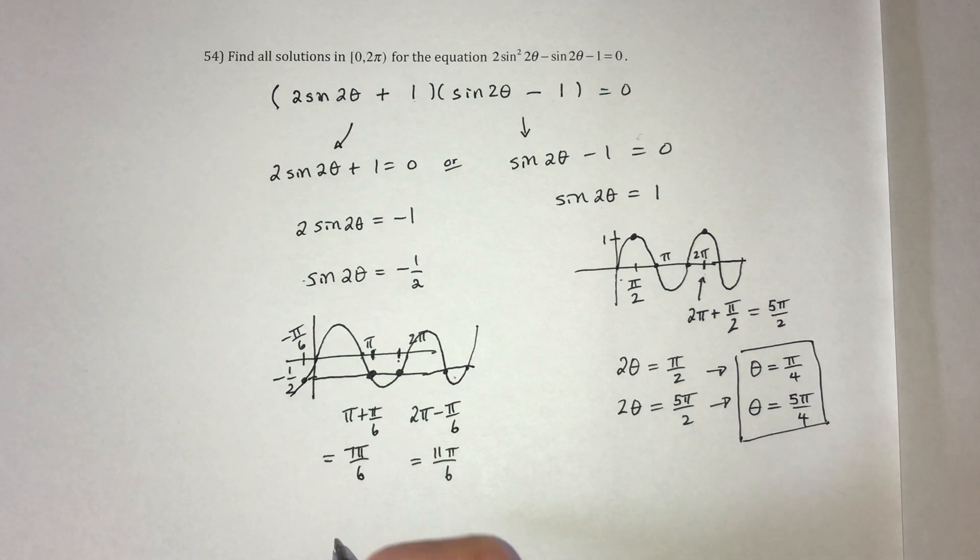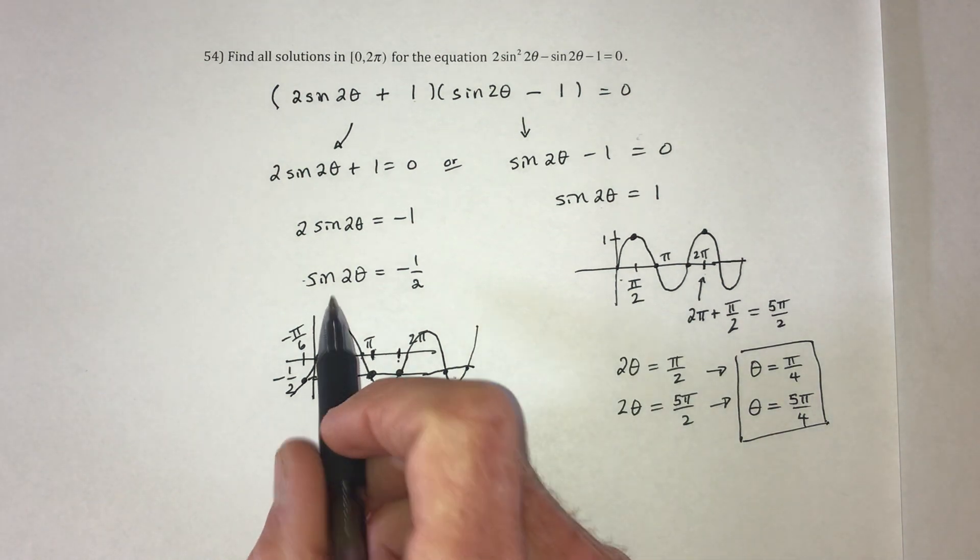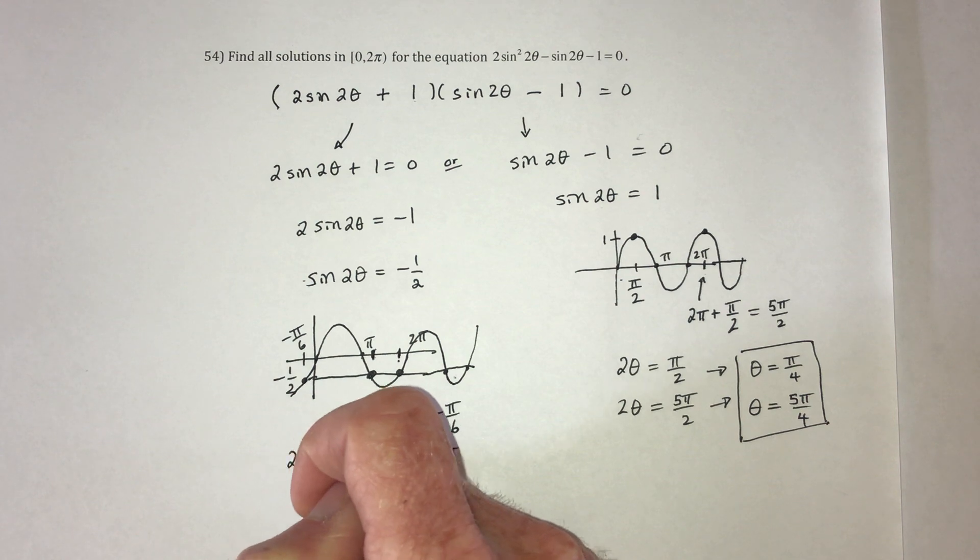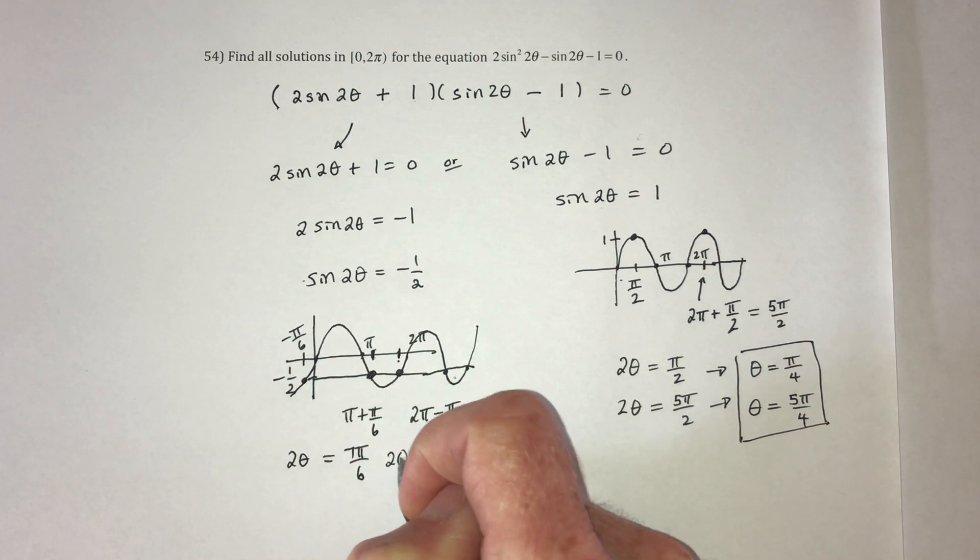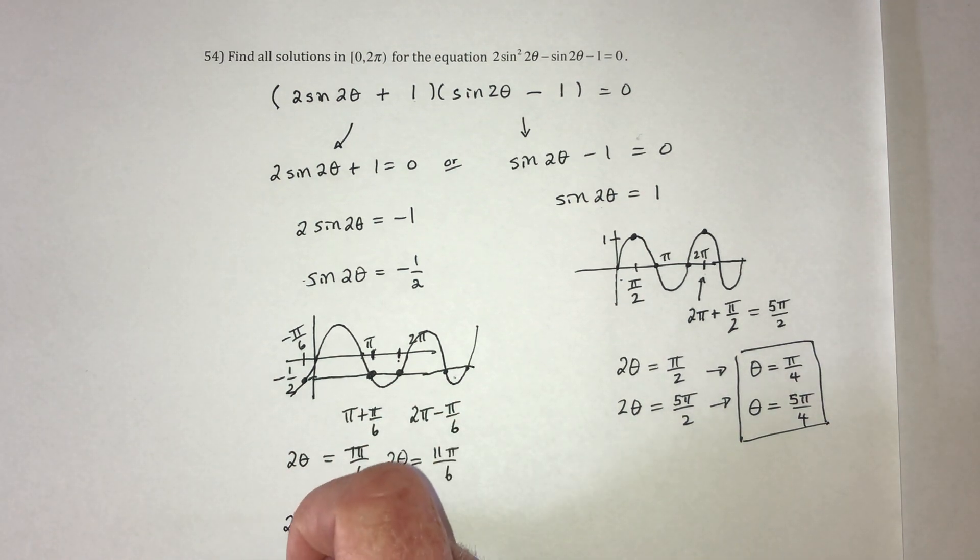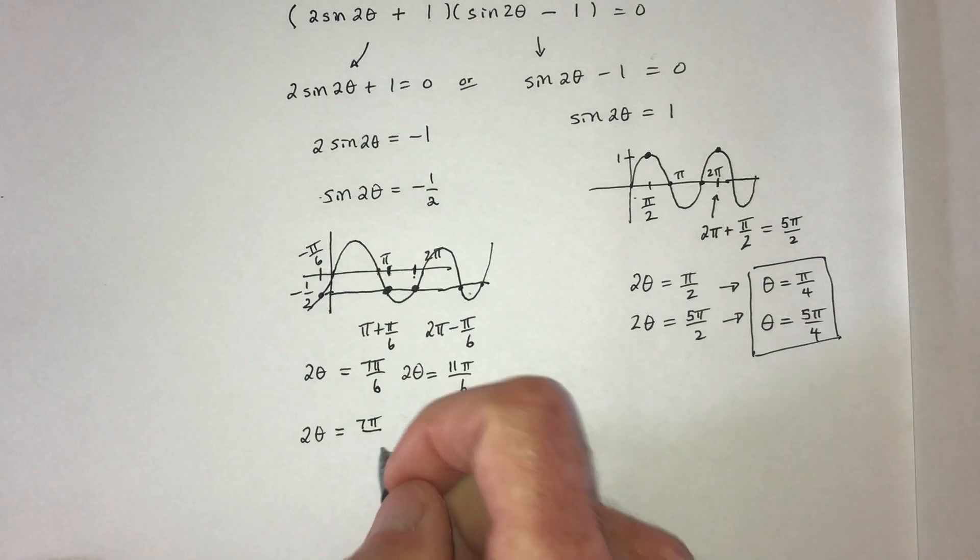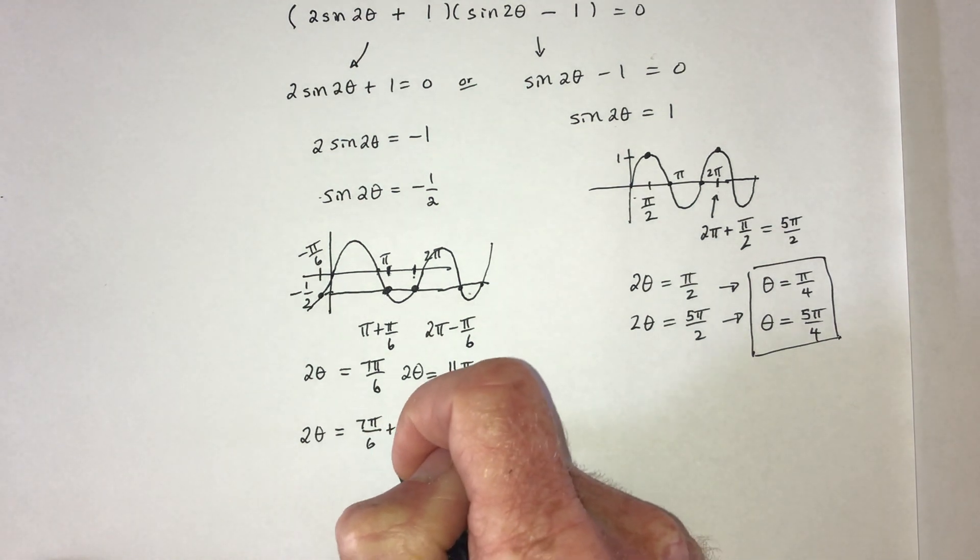So next it's going to be, you know what on this, I forgot to write the 2 theta. So next it's going to be, take 7 pi over 6 plus 2 pi.